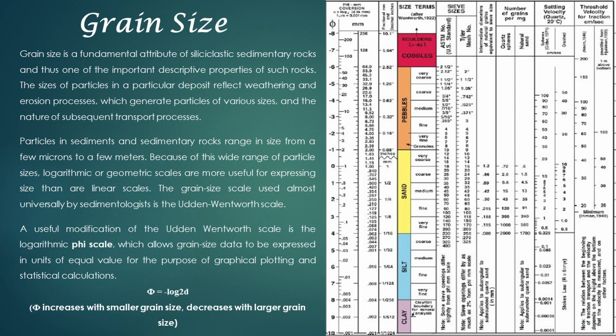Grain size is an important descriptive property of sedimentary rocks. Particles in sediments and sedimentary rocks range in size from a few microns to a few meters. Because of this wide range of particle sizes, logarithmic or geometric scales are more useful for expressing size than linear scales. The Udden-Wentworth scale is used almost universally by sedimentologists. A useful modification is the logarithmic phi scale, which allows grain size data to be expressed in units of equal value for graphical plotting and statistical calculations.